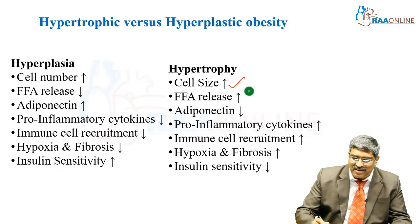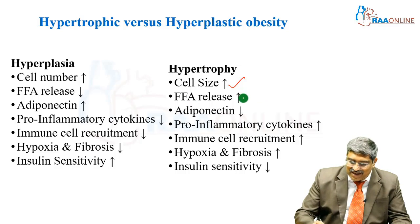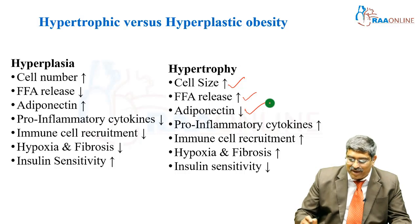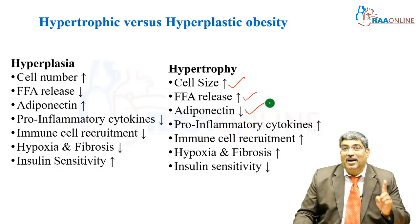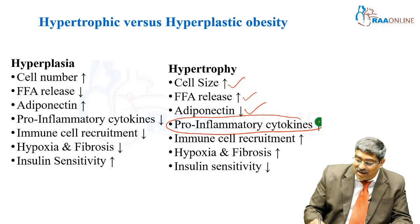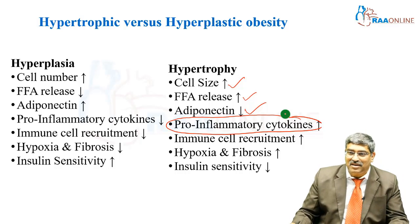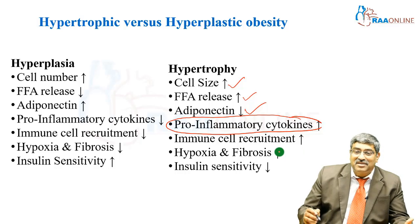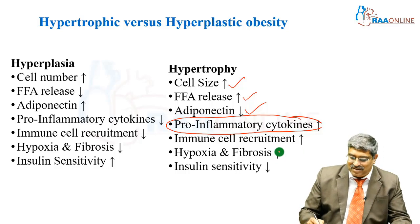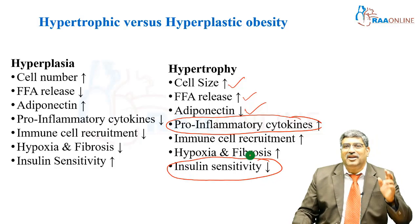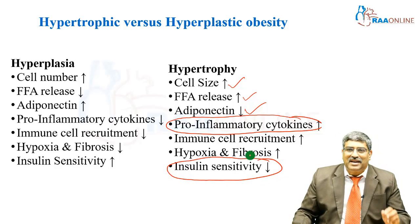But in hypertrophy, cell size is increased, free fatty acid release is increased, adiponectin is coming down, and pro-inflammatory cytokines are increased, which may lead to many disease conditions. Immune cell requirement is increased, hypoxia sets in, fibrosis increases, and most importantly, there is insulin resistance.